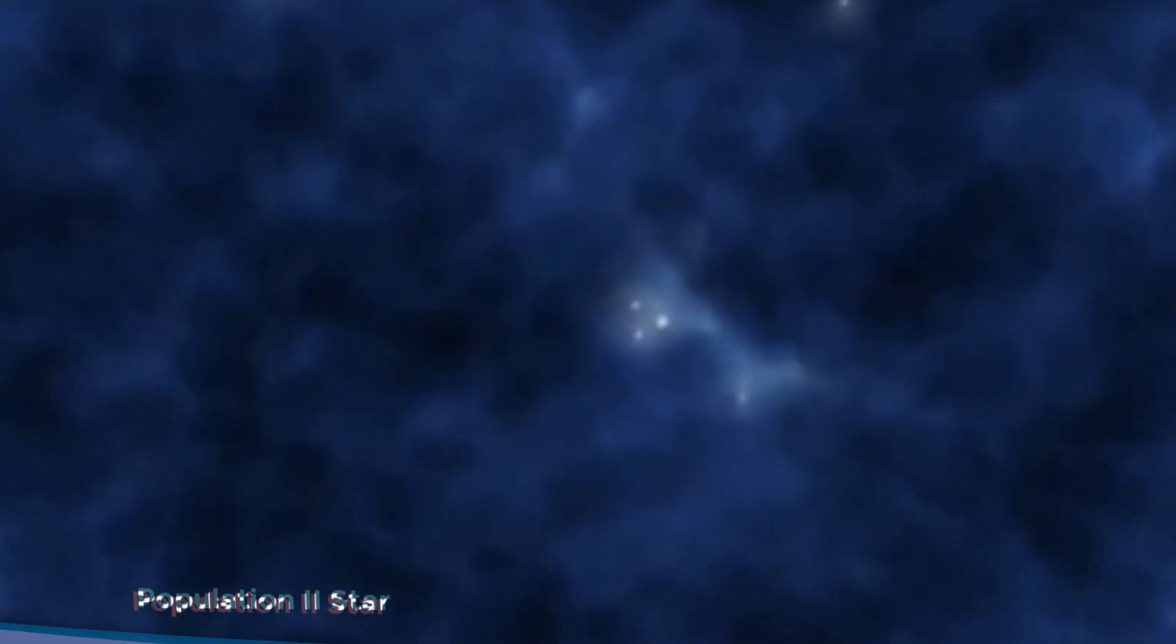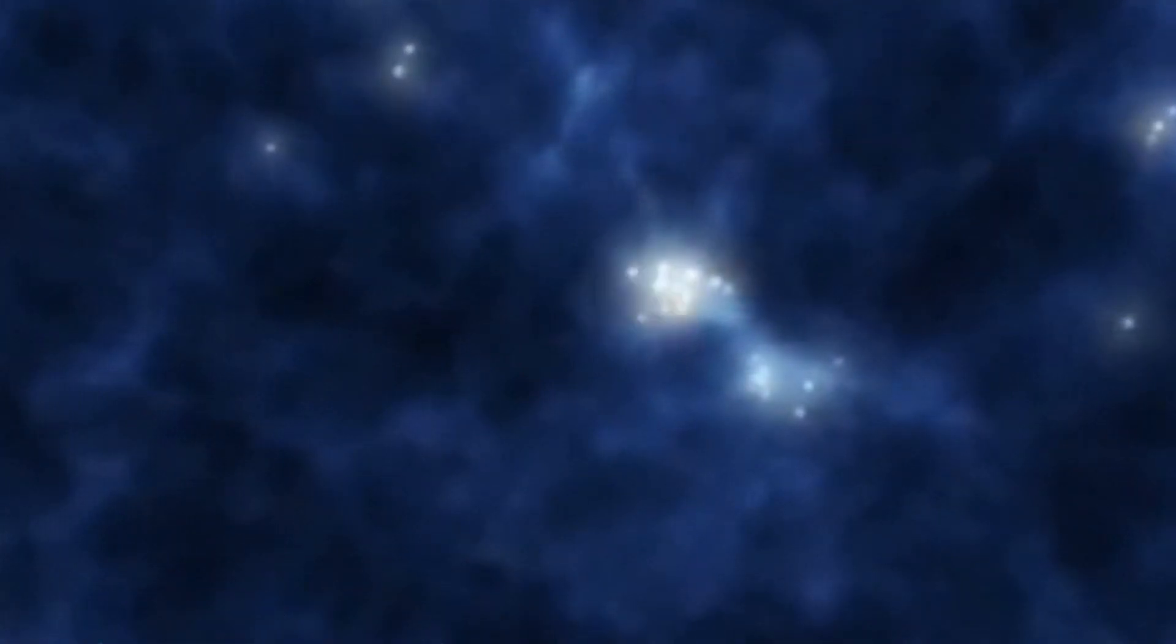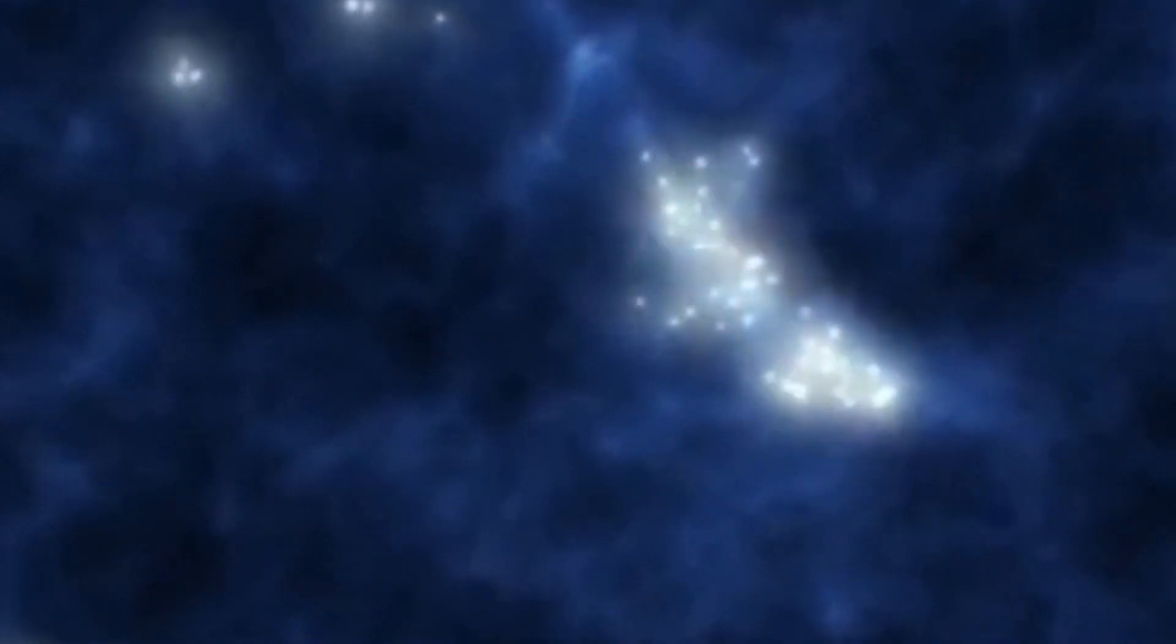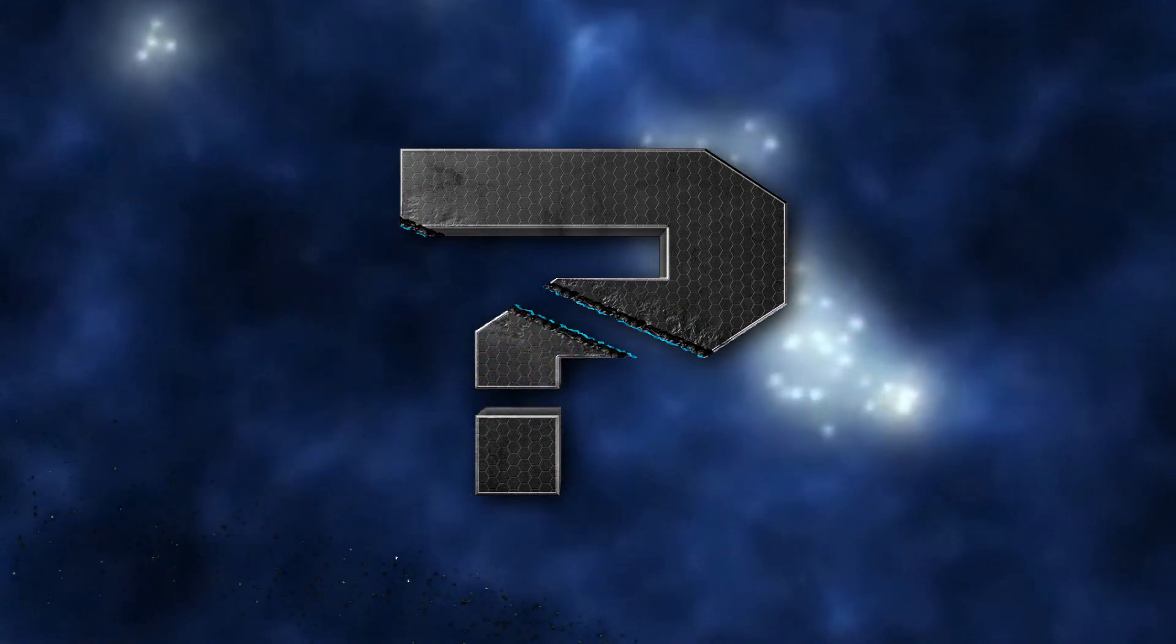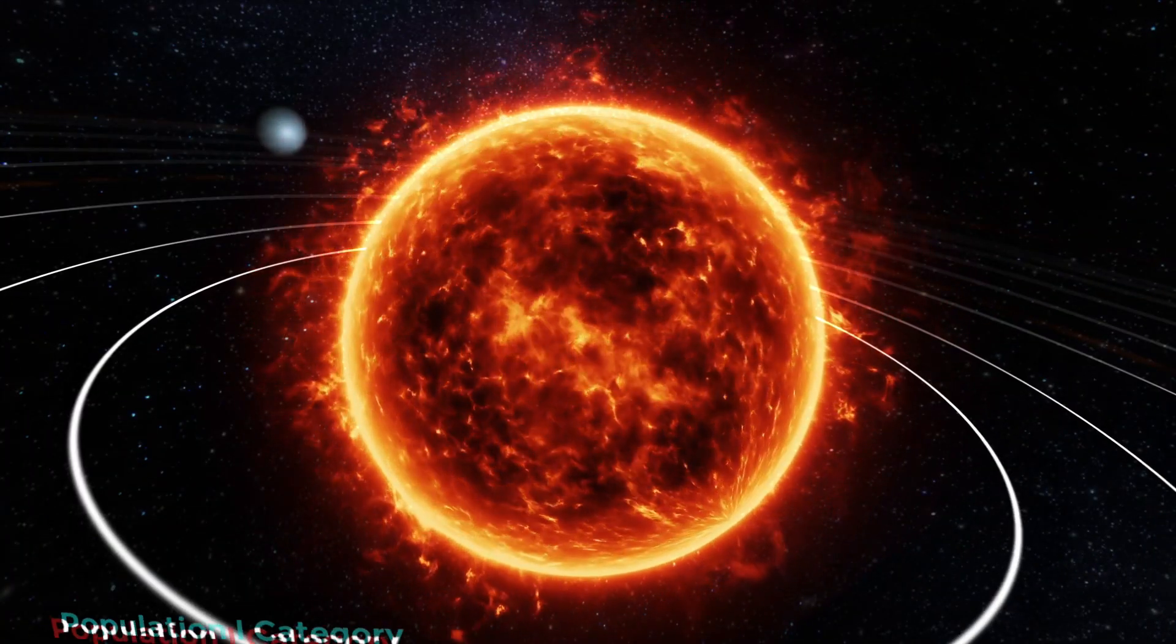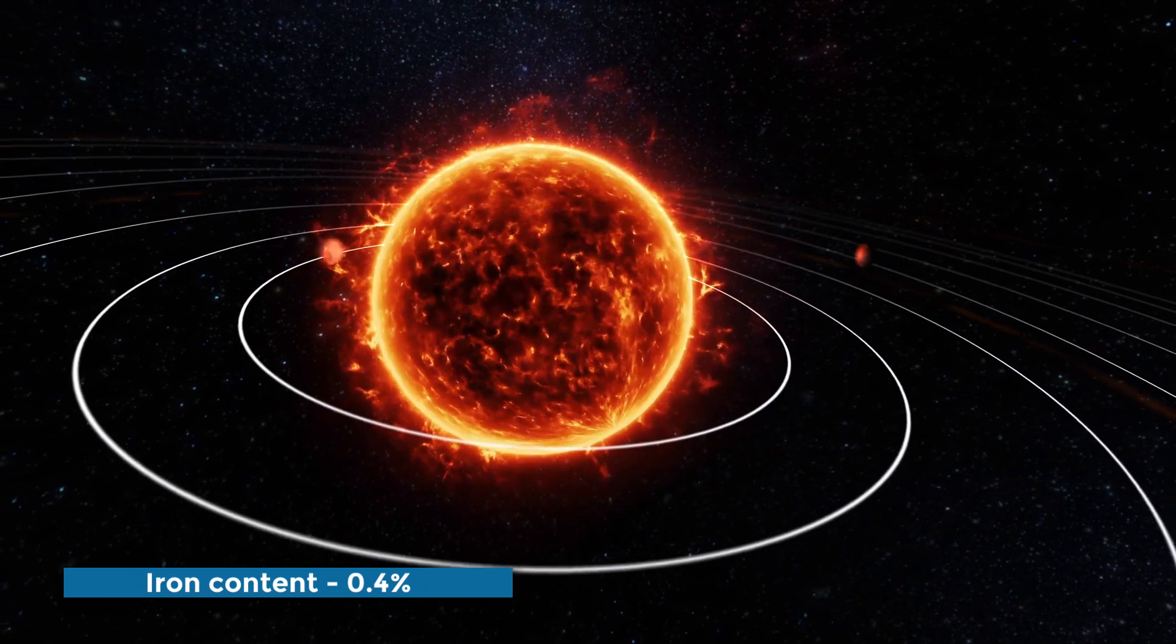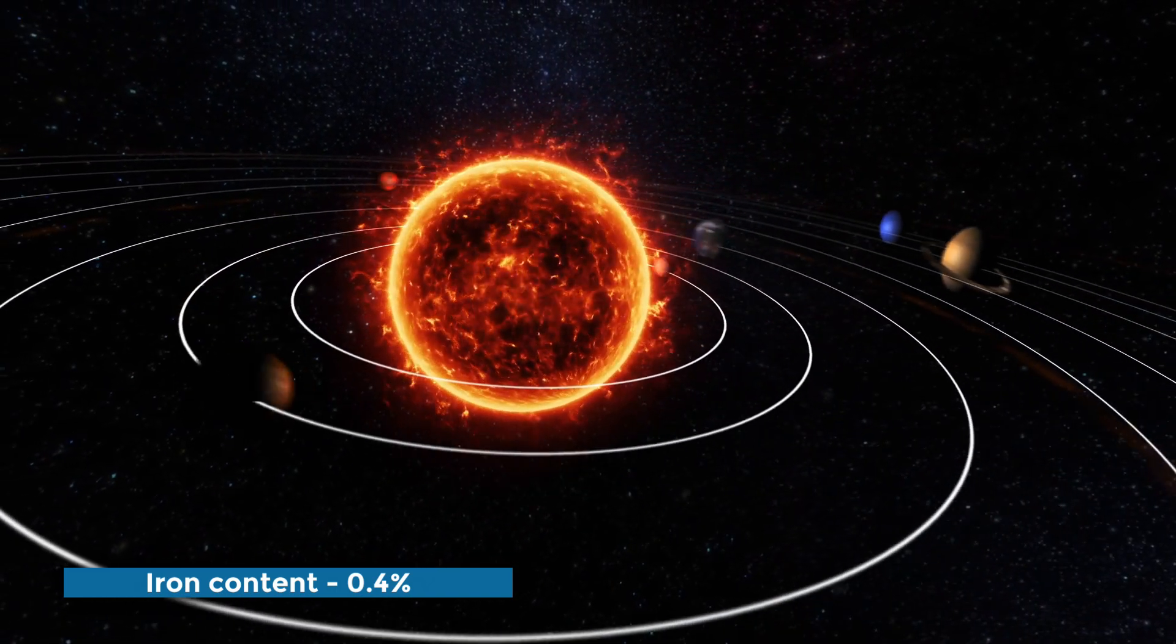Methuselah star is believed to be a Population 2 star, which is another piece of information used to estimate the age of Methuselah star. Do you know what Population 2 stars are? These stars have fewer elements than those of the Population 1 category. Our sun is an example of the Population 1 category, and Methuselah has an iron content that is 0.4% of the sun's, which suggests that the star is very old.